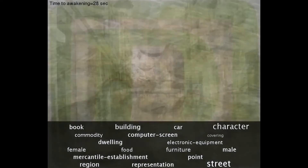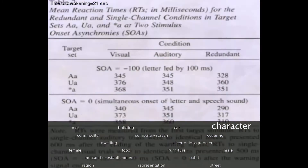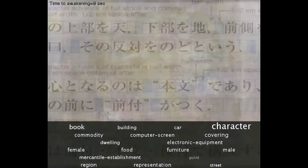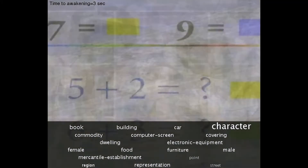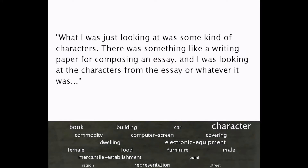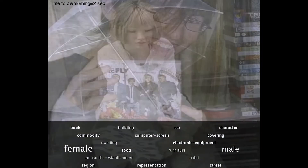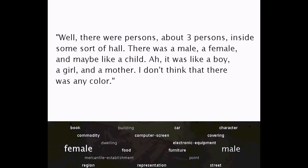In the top left, you can see the time before a person wakes up, and the model uses words at the bottom to guess what the person is dreaming about based on their brain activity. In one dream, we see lots of text and letters in different languages — when the person wakes up, they explain: 'What I was looking at was some kind of characters. There was something like a writing paper for composing an essay, and I was looking at the characters from the essay.' Before the next participant wakes up, we see streets and buildings, then a burst of different people — adults and children — with the words 'female' and 'male' highlighted. When the person wakes up, they say: 'There were persons, about three persons, inside some sort of hall. There was a male, a female, and maybe like a child — a boy, a girl, and a mother. I don't think there was any color.' These scientists were able to predict what people were dreaming about before they even woke up.